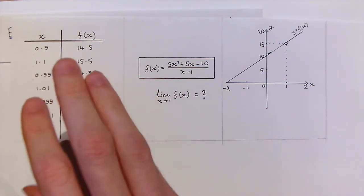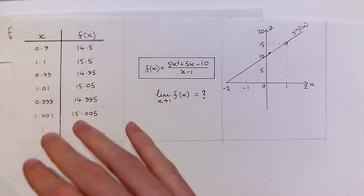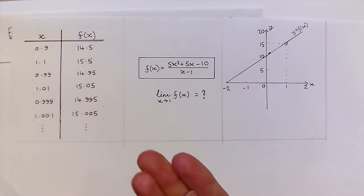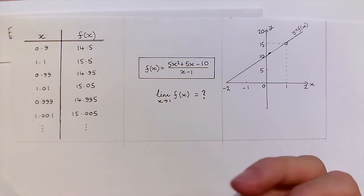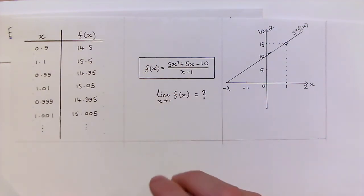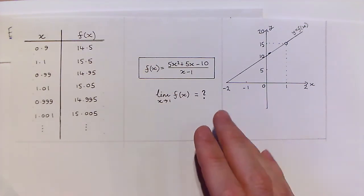But it's important to note that neither of these approaches, drawing a graph, looking at particular function values constitute a proof that the limit is 15, even if they're quite convincing. Because we haven't made any reference yet to the definition of limit.